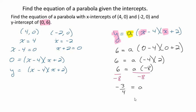So that is the value of a that needs to go in this place right here to give us the correct y-intercept. So there we have it. Our answer is going to be y = -3/4(x - 4)(x + 2).